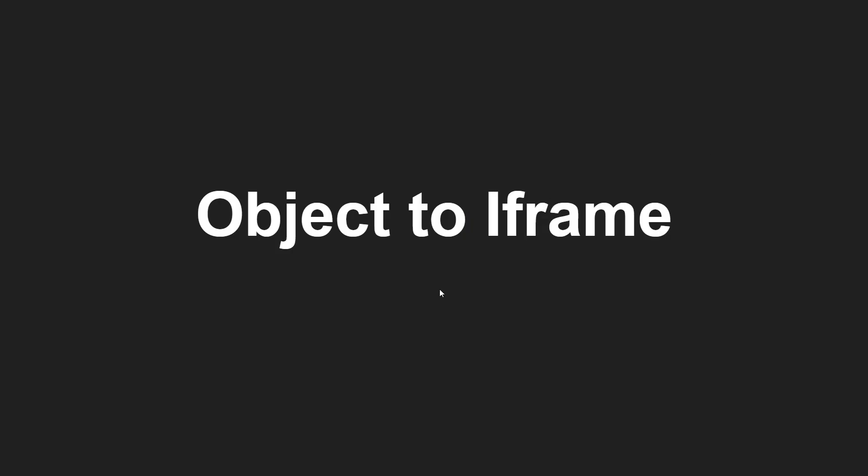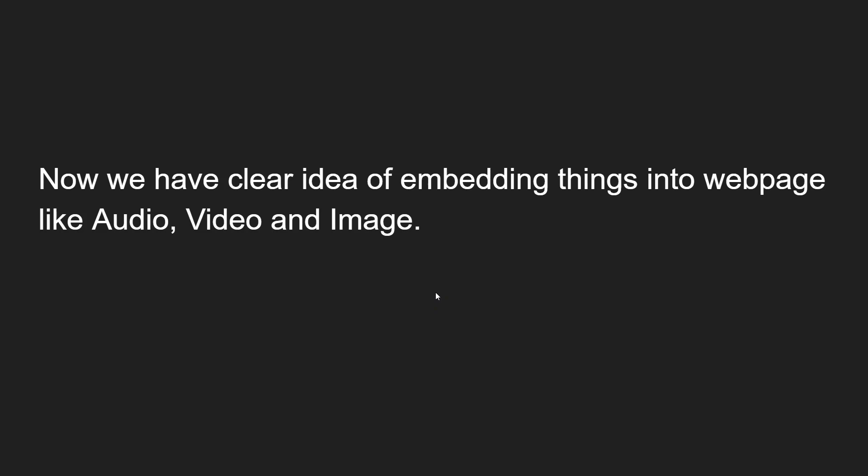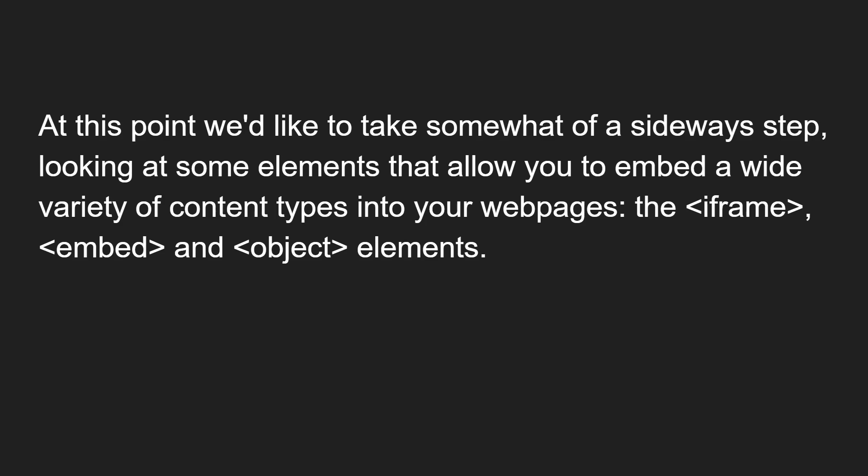Before continuing to learn about iframe, we have a clear idea of embedding things into a web page like audio, video, and image. For audio we use the audio element, for video we use the video element, and for image we use the img element. Now we would like to take a sideways step and look at some elements that allow you to embed a wide variety of content types into your web pages — that is the iframe, embed, and object elements.